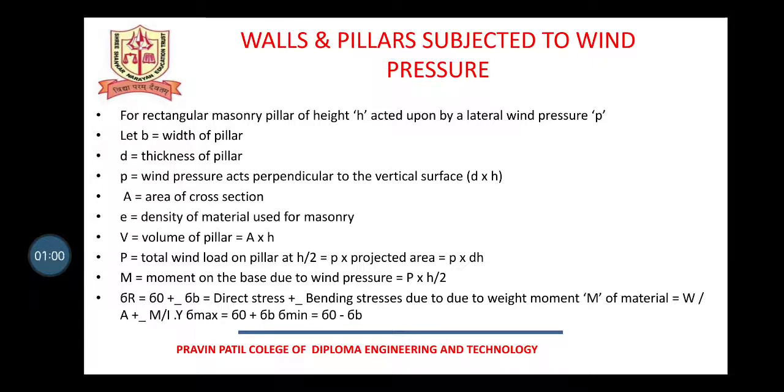We will need to calculate p. Either we can calculate it or it will be given to you in question. That is, wind pressure perpendicular to the vertical surface. A, area of cross section. ρ, density of material used for masonry. V will be the volume of pillar which is area multiplied by the height.